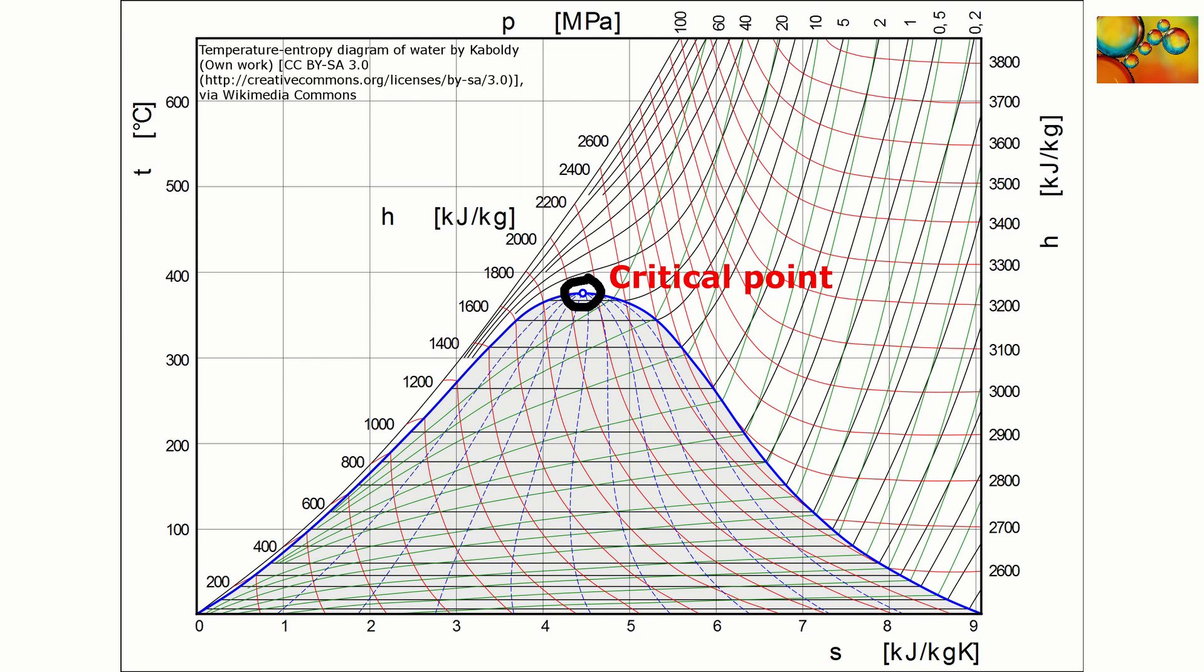The saturated liquid line and the saturated vapor line come together at the critical point of the pure substance. This is the limiting situation for the coexistence of a liquid and a vapor phase.